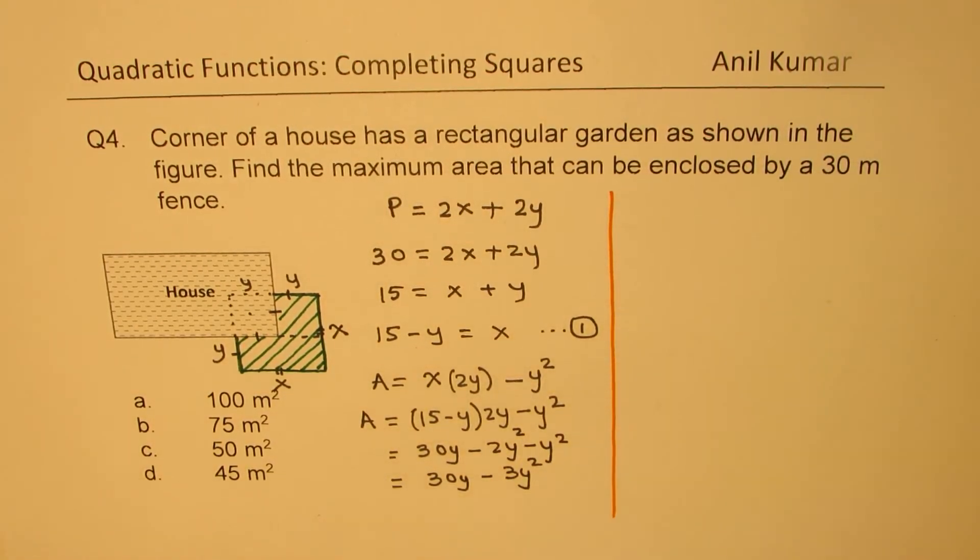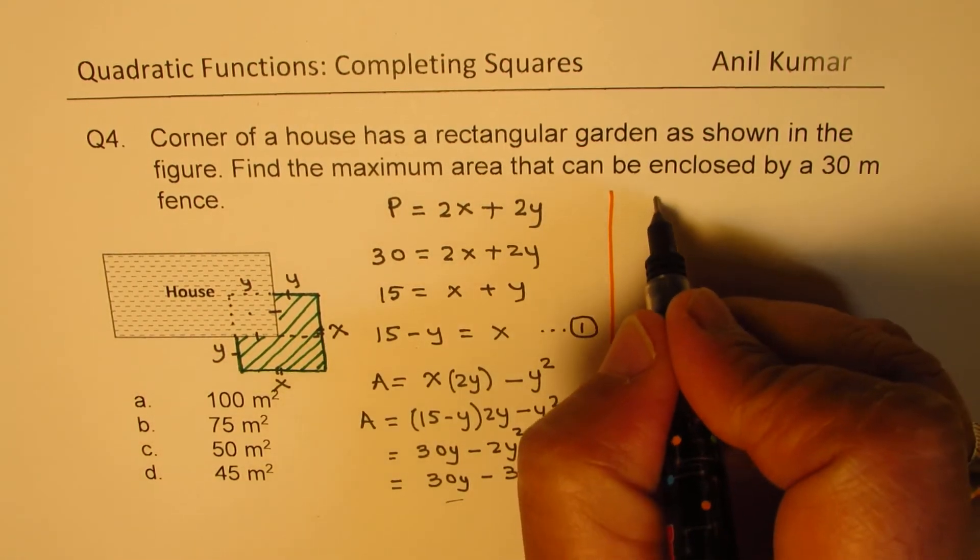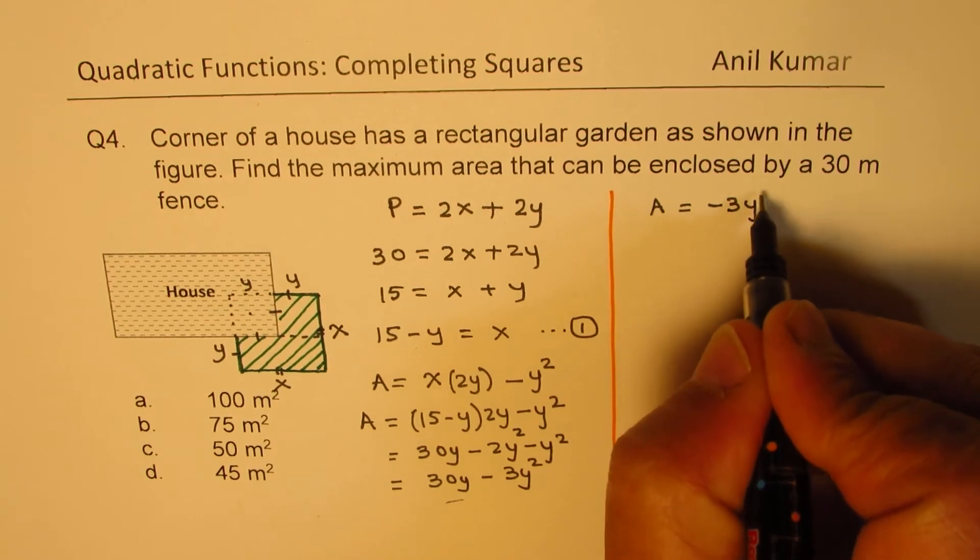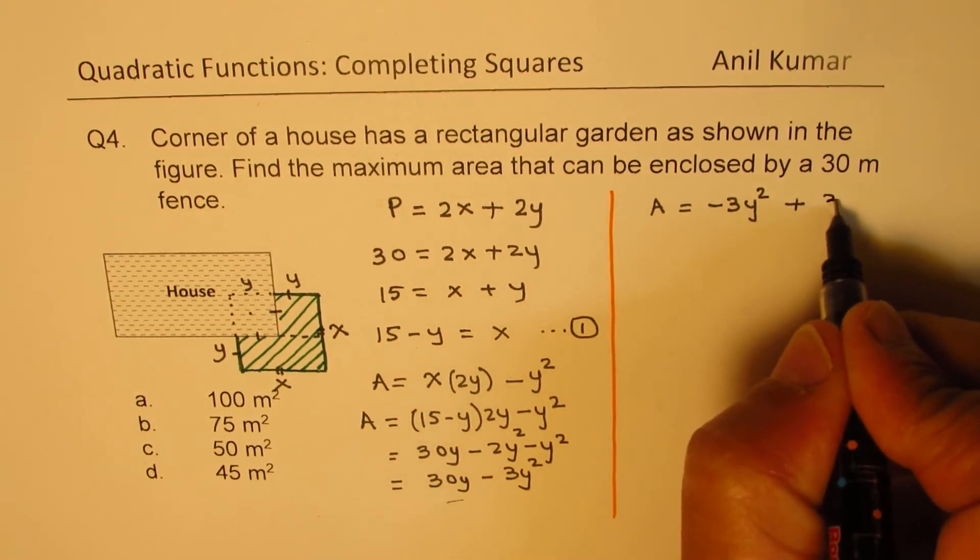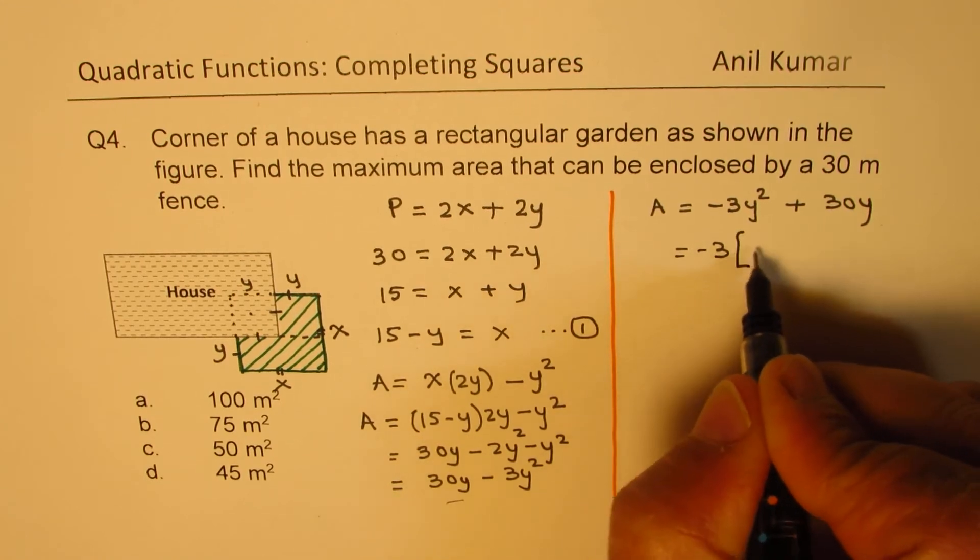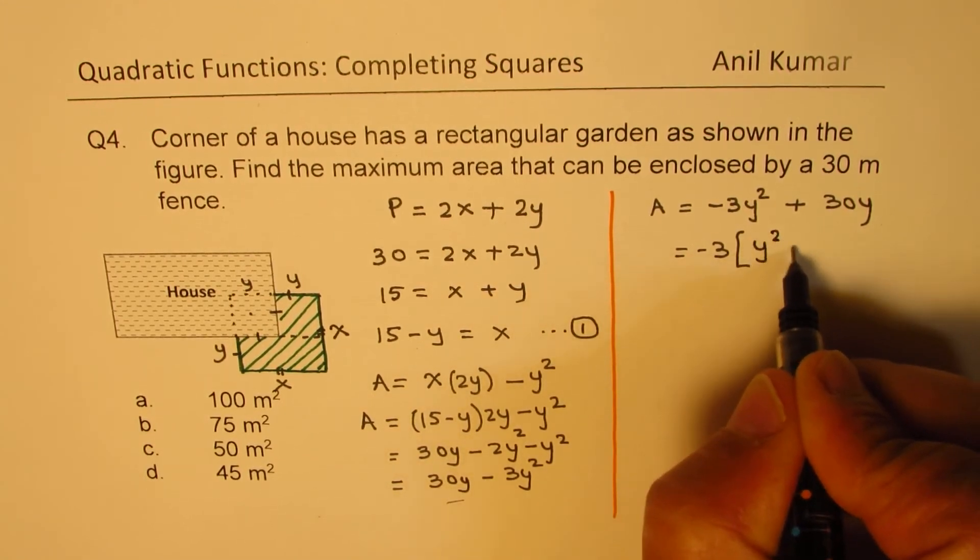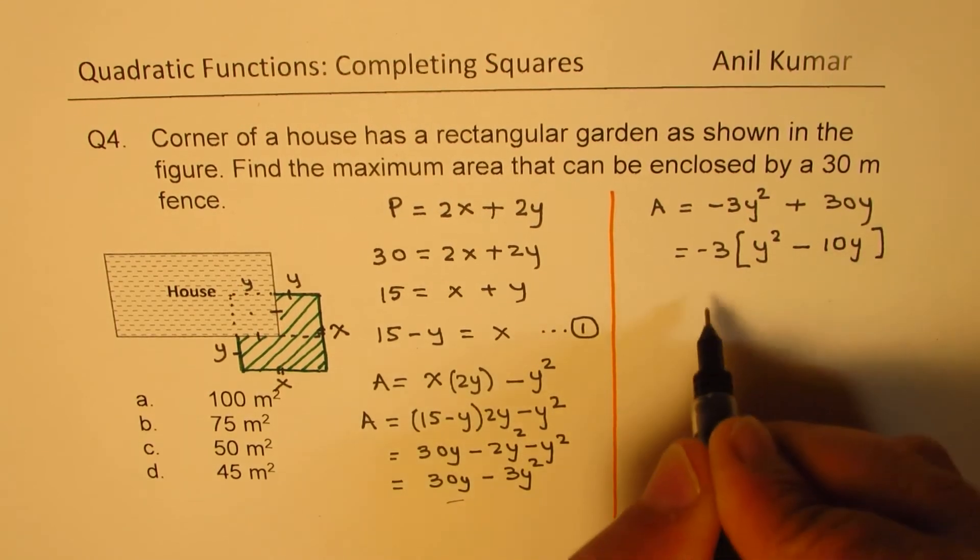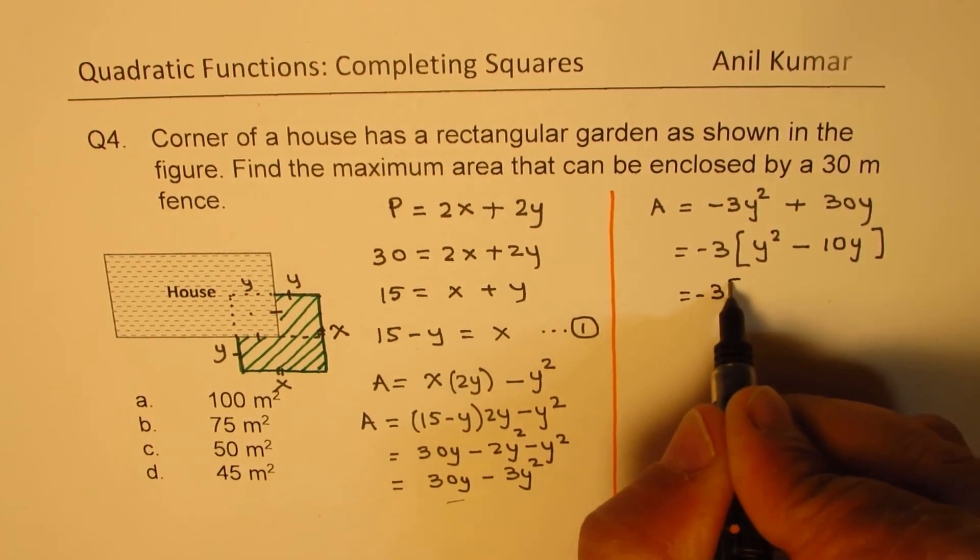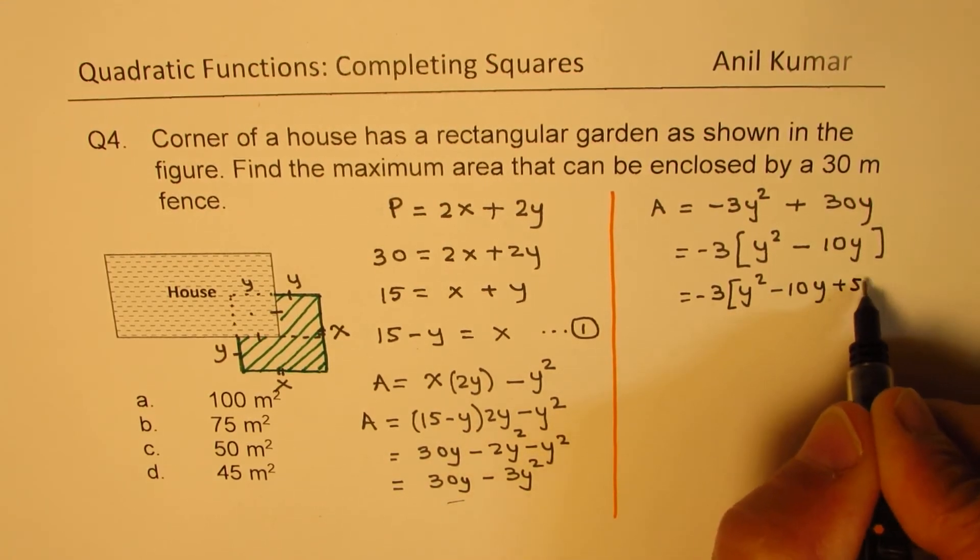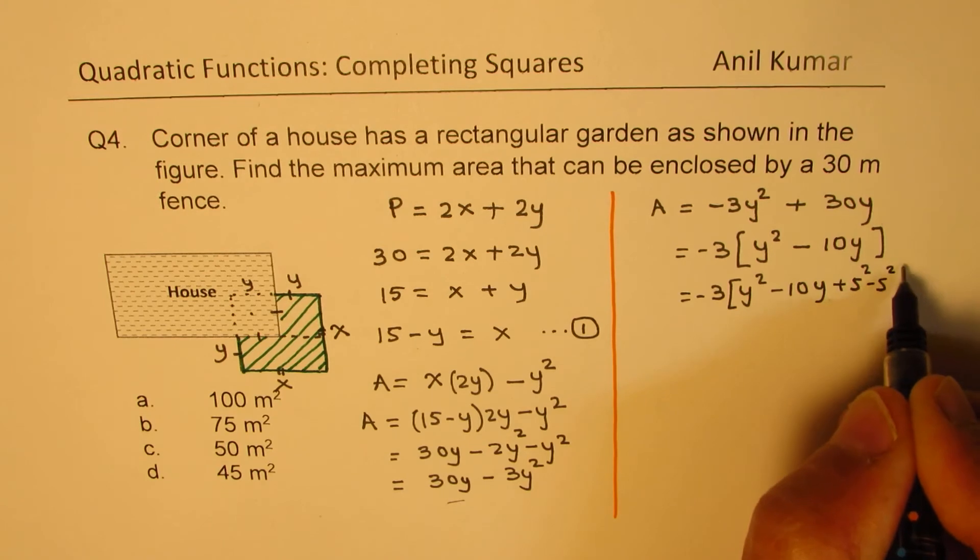This is a quadratic equation which we can write in vertex form and find the maximum area. Let's do completing the squares. We have -3y² + 30y. We can take -3 common, so we get y² - 10y. Half of 10 is 5, so we add and subtract 5² to this.